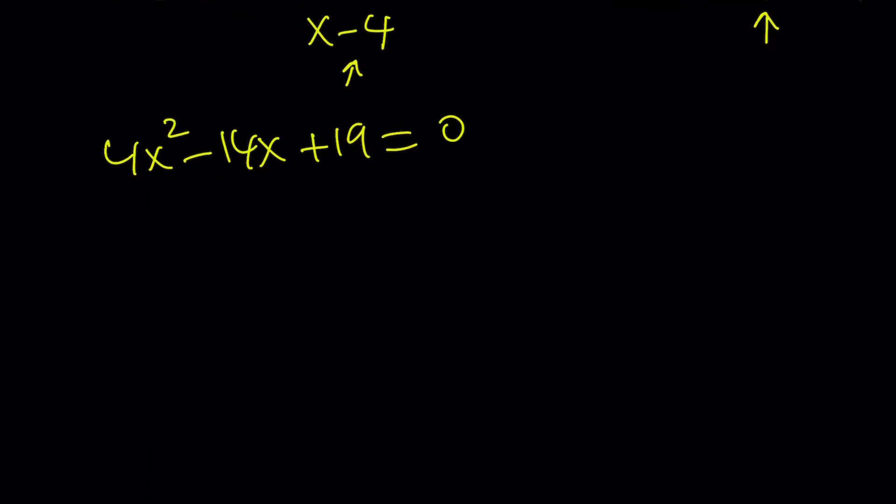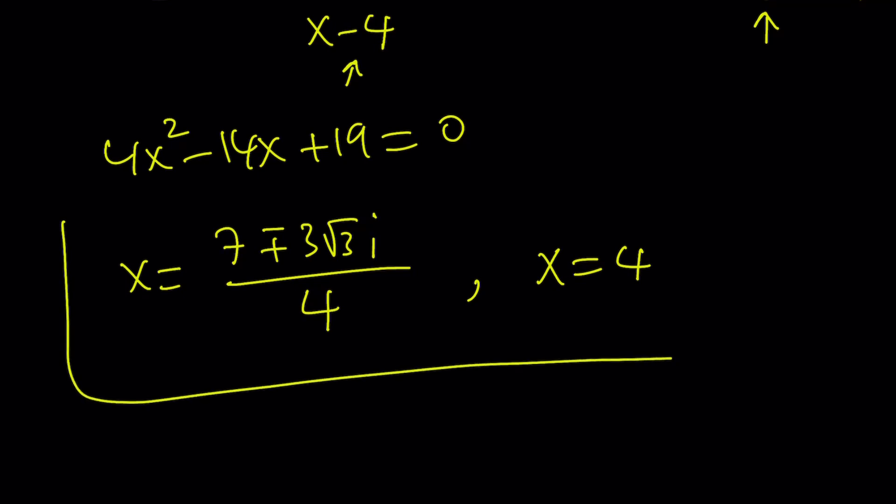And the roots are going to be x equals 7 plus minus 3 root 3i divided by 4. So we don't get any real solutions from here because the discriminant is less than 0. We only get one real solution and that is x equals 4. And this almost brings us to the end of the video, but I got to show you what the graph looks like. And then we'll finish up.